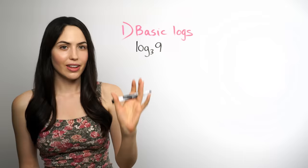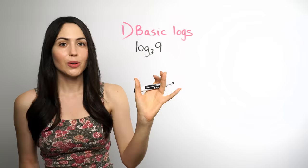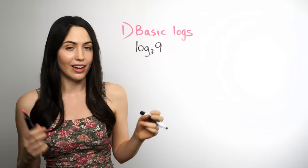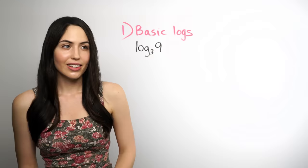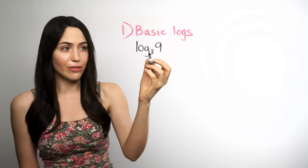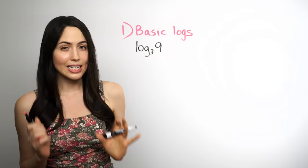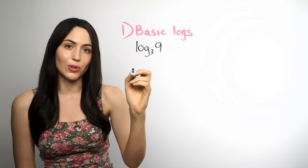What if you have a basic log expression like this? How do you even read that expression? The way you read it is log base 3 of 9. But how do you evaluate it? There are a few ways. One way, if you're the kind of person who loves to do things in your head, you can just think to yourself: 3 raised to what power gives me 9? But for all the rest of us, usually the easiest and fastest way is to rewrite this into exponential form.